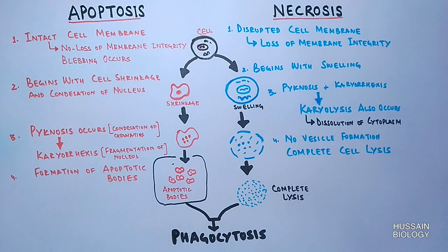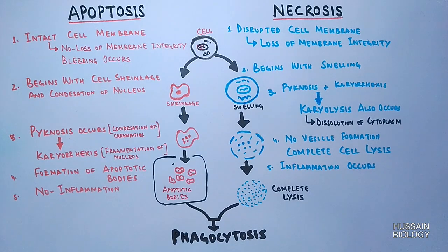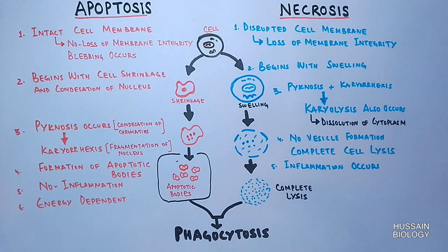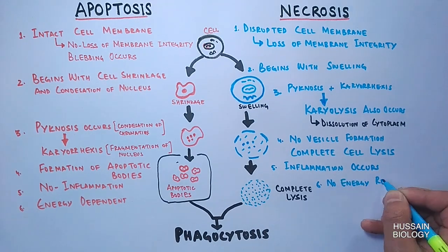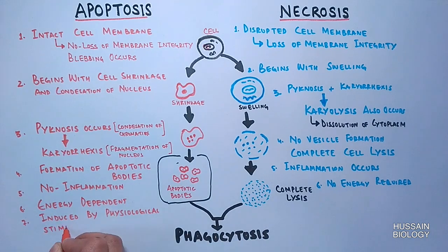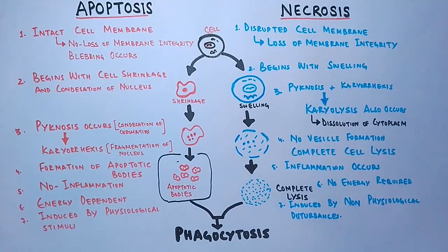Looking at some physiological differences: in apoptosis there is no inflammation, while in necrosis inflammation occurs. Regarding energy, apoptosis needs energy to be driven, while necrosis is a passive process and is energy independent. Finally, apoptosis is initiated by physiological stimuli, while necrosis is mostly induced by non-physiological stimuli.